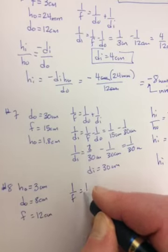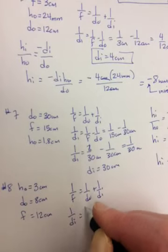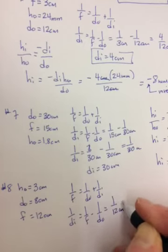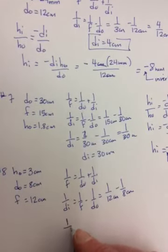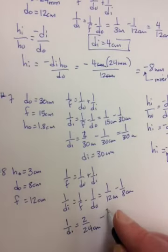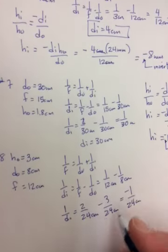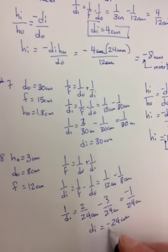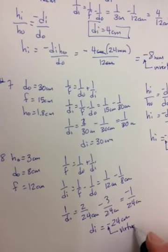So 1 over F is equal to 1 over DO plus 1 over DI. So 1 over DI is equal to 1 over F minus 1 over DO. So 1 over 12 minus 1 over 8. Common denominator 24. So 2 over 24 minus 3 over 24. It should equal negative 1 over 24. So where is the image going to be? It's going to be 24 centimeters behind the mirror. It's going to be virtual. That's what the negative means.